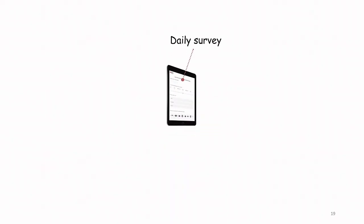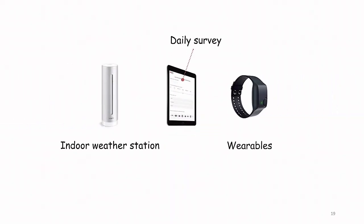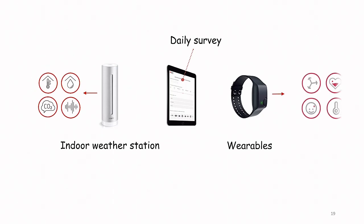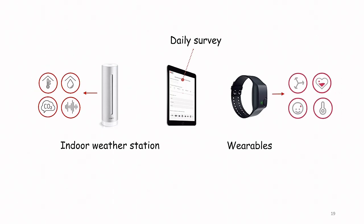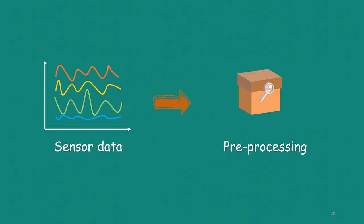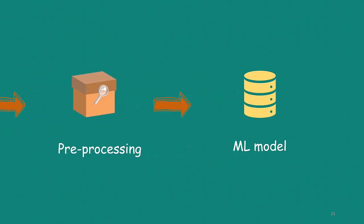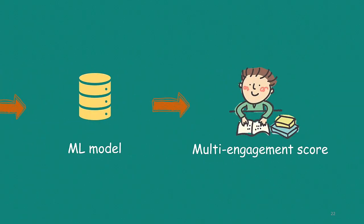In our research, we collect data from daily surveys, indoor weather stations, and wearables using multiple sensors in a private high school. We use sensor data as input, then apply pre-processing techniques to build machine learning models to predict multi-dimensional engagement for students.